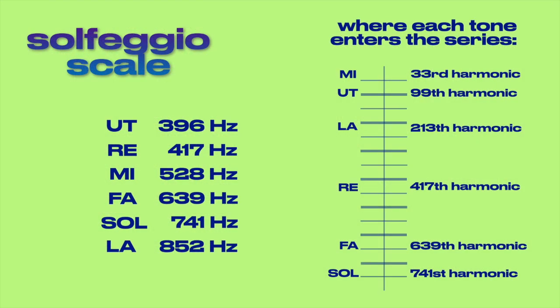The tonal names of Do, which is Ut, Re, Mi, Fa, Sol, and La originate within the solfeggio scale, but their frequency intervals differ greatly from those of our modern diatonic scale.